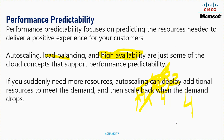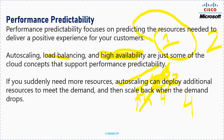If you suddenly need more resources, auto scaling can deploy additional resources automatically. For example, if you currently need one virtual machine and the demand suddenly increases, it will create another virtual machine with the same configuration and deploy it automatically. When demand drops, it will automatically remove that additional virtual machine. This configuration is done on Azure.